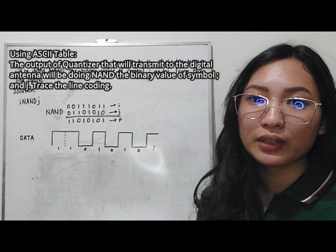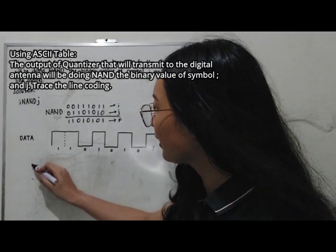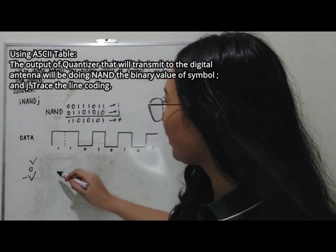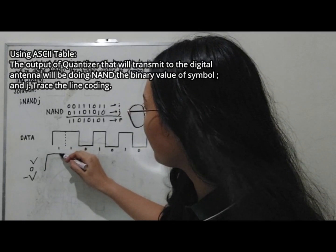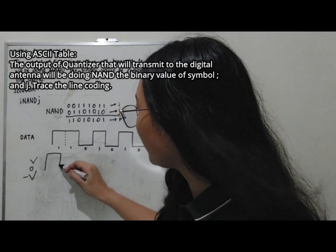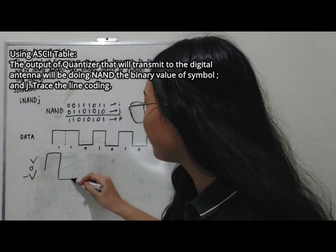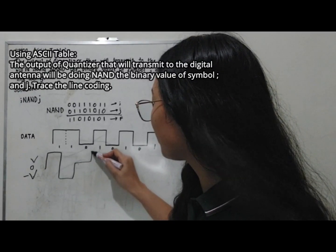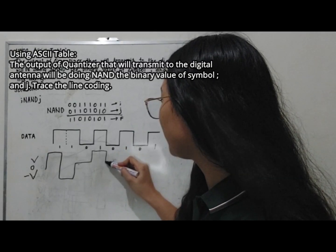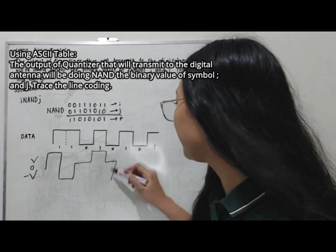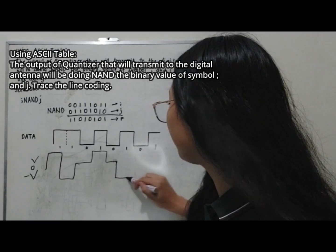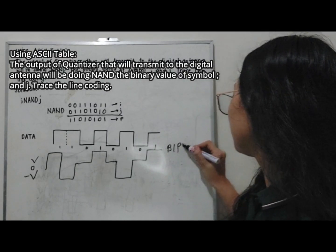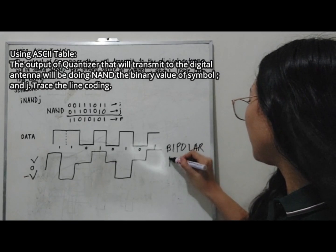For the bipolar NRZ, the 1s alternate between positive and negative voltage levels, while 0s remain at zero. For the sequence: positive one, then negative for the next one, zero, positive one, zero, negative one, zero, positive one. This is the bipolar NRZ waveform.